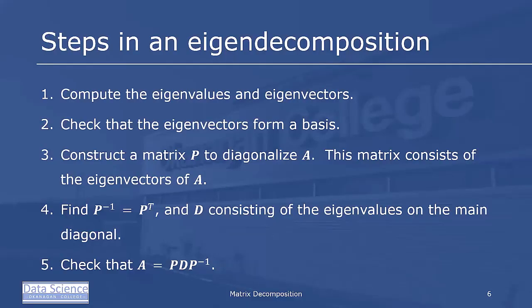So how do we actually get an eigendecomposition? Well first, we want to check and compute the eigenvalues and eigenvectors. We want to check that the eigenvectors form a basis. Sometimes we can do that very quickly by just looking at them, other times we have to do some calculations.